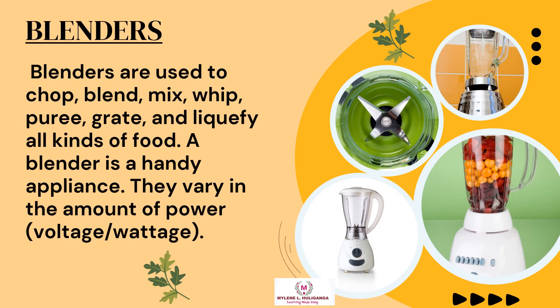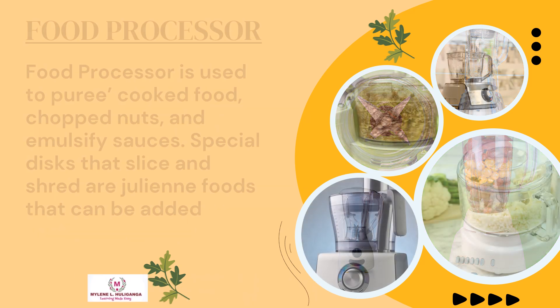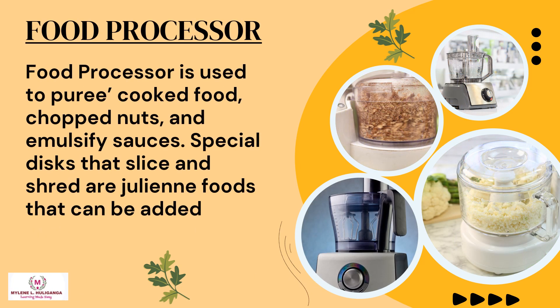Blenders are used to chop, blend, mix, whip, puree, grate, and liquefy all kinds of food. A blender is a handy appliance that varies in the amount of power, voltage, or wattage. A food processor is used to puree cooked food, chop nuts, and emulsify sauces. Special discs that slice, shred, and julienne foods can also be added.